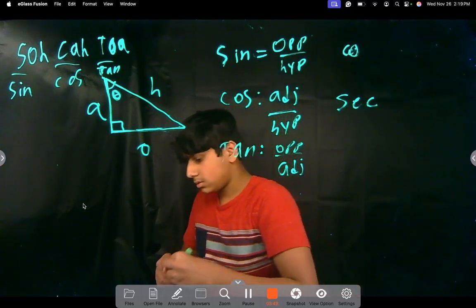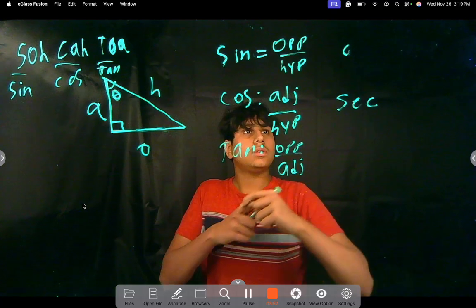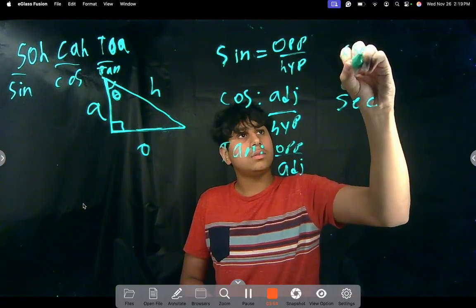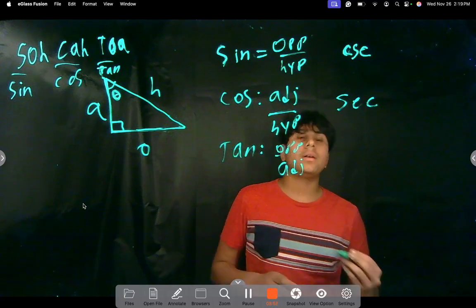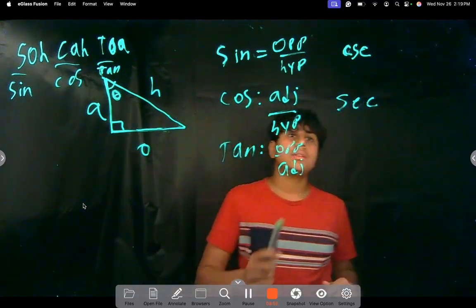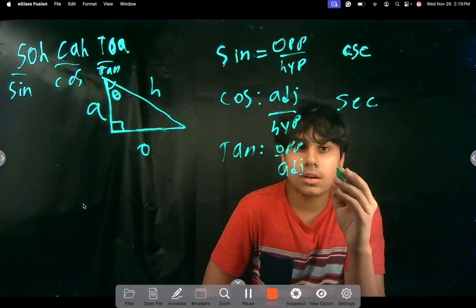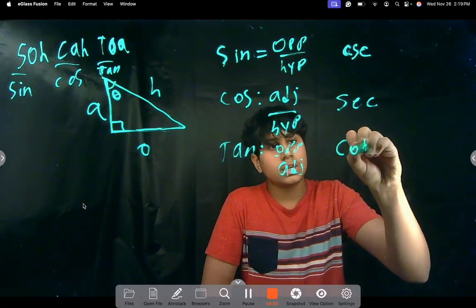So, this is CSE for cosecant. This is secant, sec. And then, this is cot for cotangent.